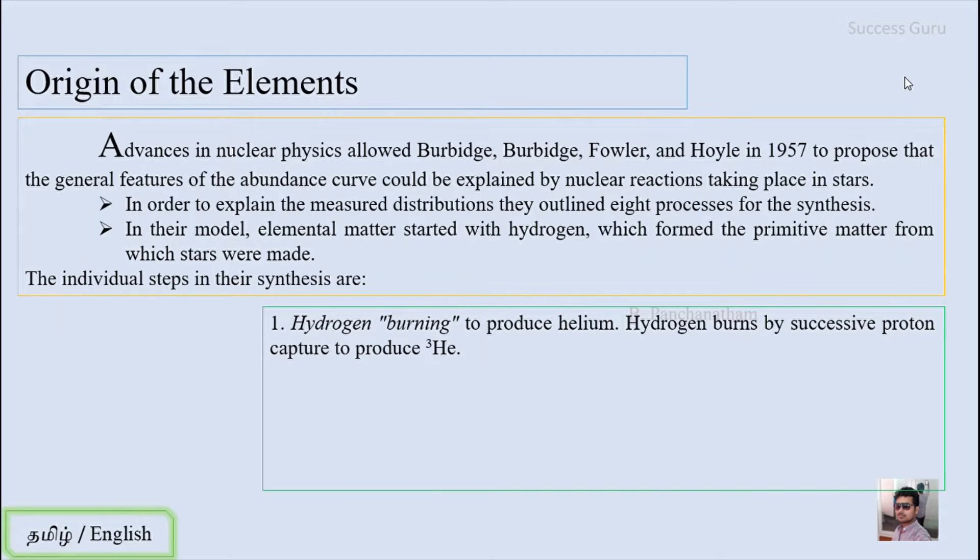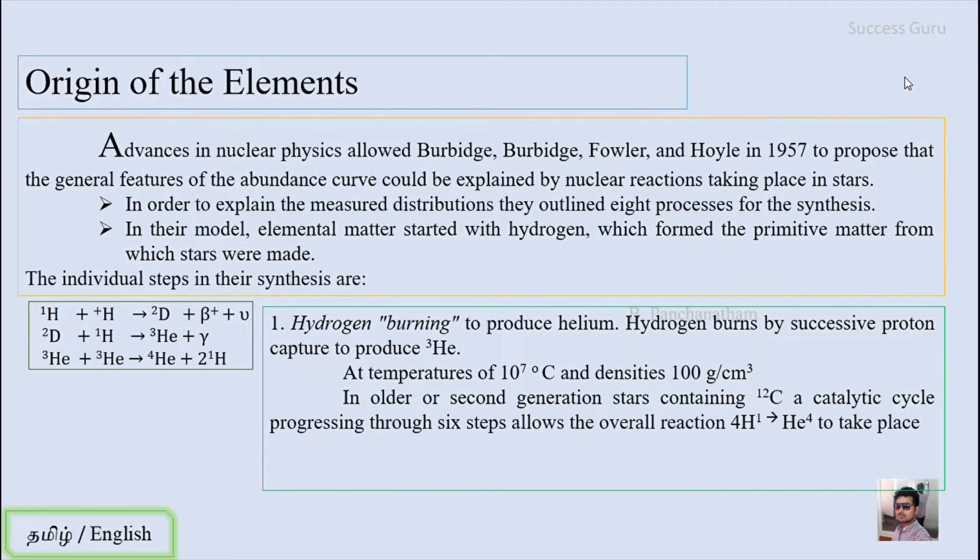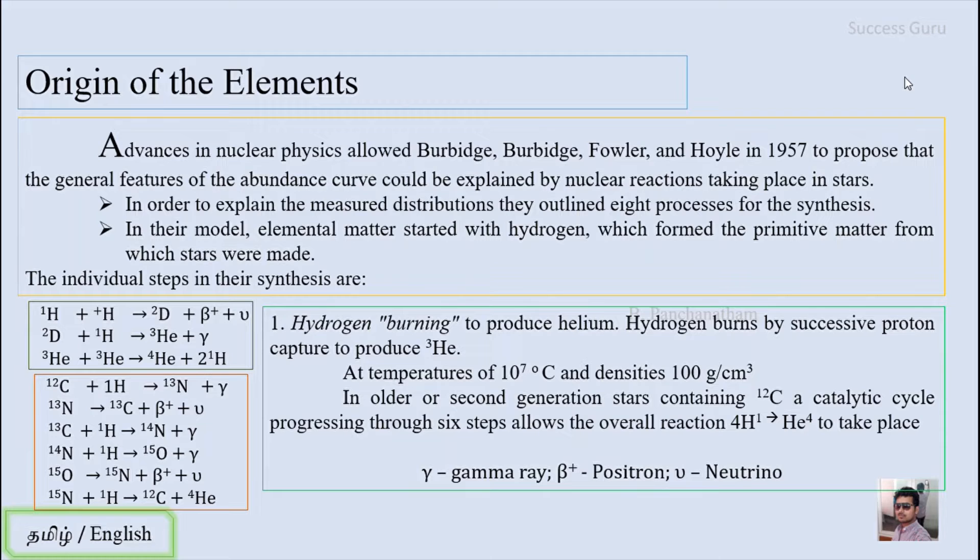The first process is hydrogen burning, where hydrogen burns to produce helium. Hydrogen burns by successive proton capture to produce helium-3, as explained in the left side table. This process takes place at temperatures of 10^7 degrees Celsius and density of 100 grams per centimeter cubed. In the oldest or second generation stars that contain carbon-12, a catalytic cycle progressing through six steps allows the overall reaction from hydrogen to helium, as explained in the left side table.